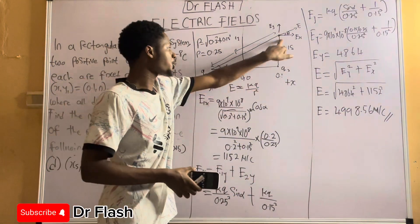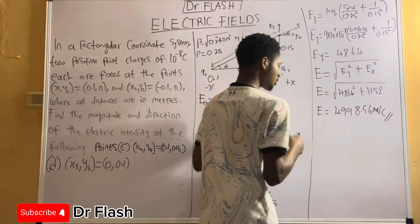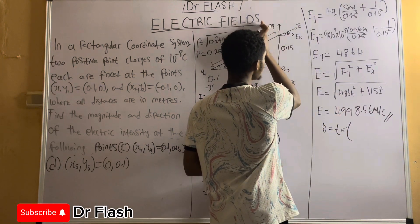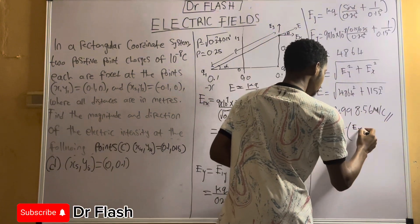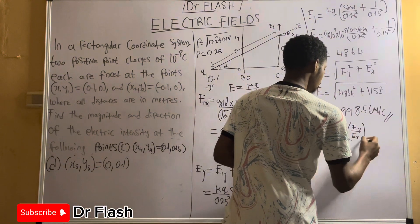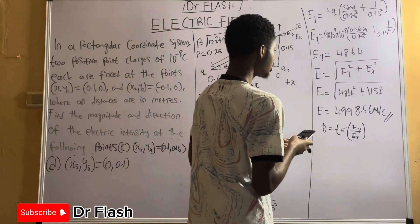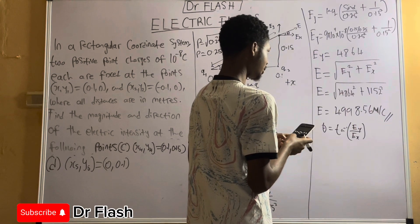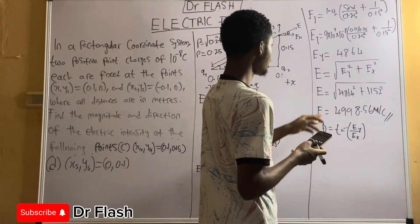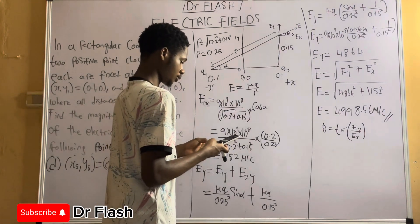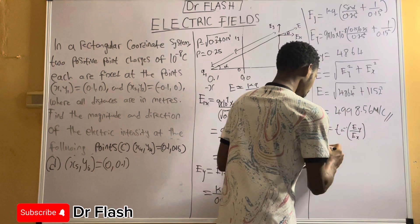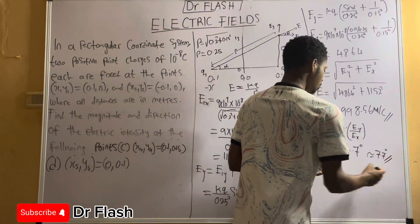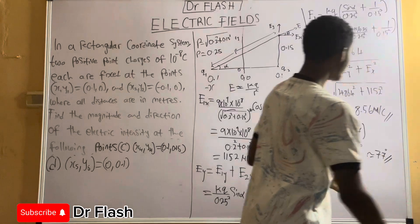The direction is angle theta, where theta = tan⁻¹(Ey/Ex) — opposite over adjacent. So theta = tan⁻¹(4864 / 1152), which gives a value of approximately 76.7 degrees, or roughly 77 degrees. That is the direction of the net electric field.